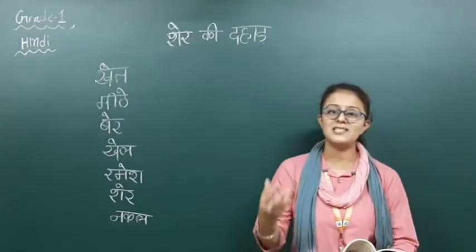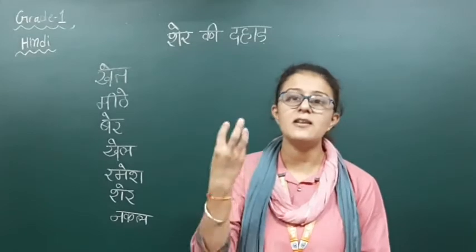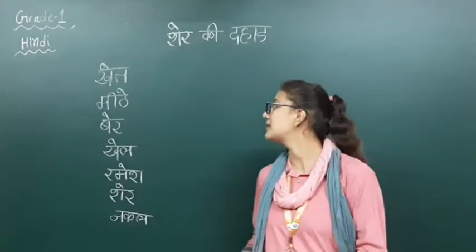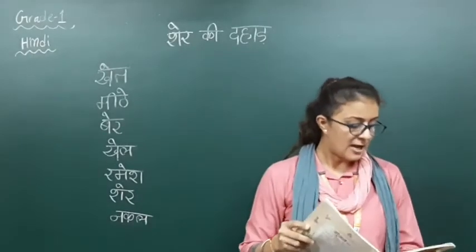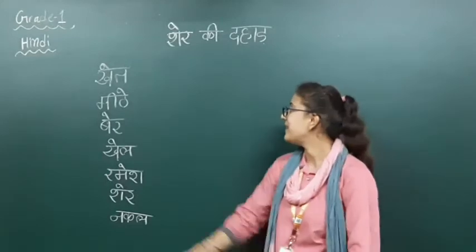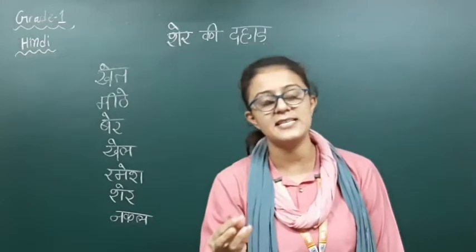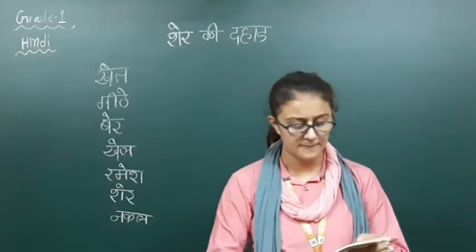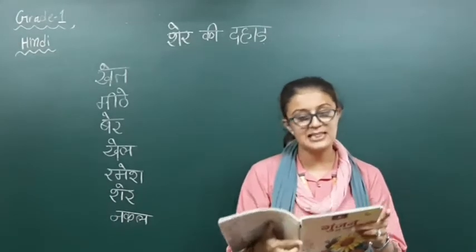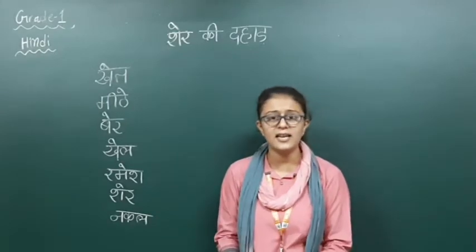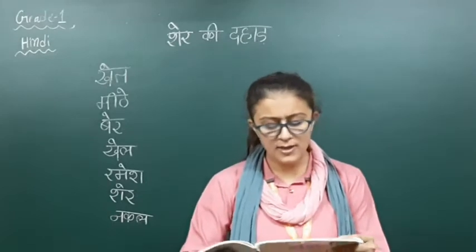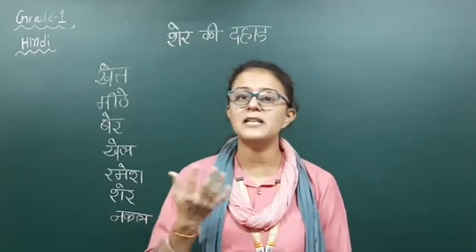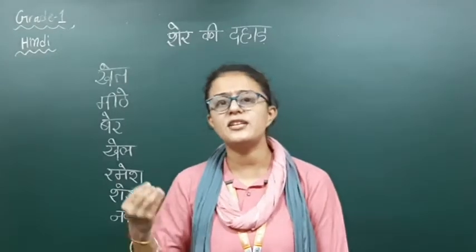Let me start from the chapter. Ham khet par gaye — khet yaani ki ek aisi jagah jahan par crops yaani ki bahot acchi tarah se ful, pool wagera sab ugaye jaate hai. Ham ne meethe ber khaye — meethe ber yaani ki sweet cherries. Hum badi der tak udhar khelte rahe — jo bachche the, wo khet par bahot zyada der tak khelte rahe jab tak wo thake nahi. Humne khoob khele khoob khele.